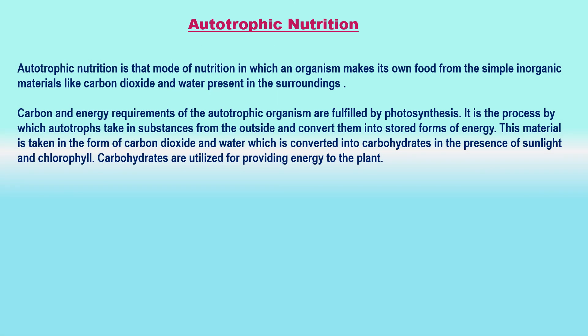Autotrophic Nutrition is that mode of nutrition in which an organism makes or synthesizes its own food from simple inorganic materials like carbon dioxide and water present in the surroundings, with the help of sunlight energy. The green plants have an autotrophic mode of nutrition. Autotrophic bacteria also obtain their food by the autotrophic mode of nutrition, though most bacteria are not autotrophic. The organisms having autotrophic mode of nutrition are called autotrophs.